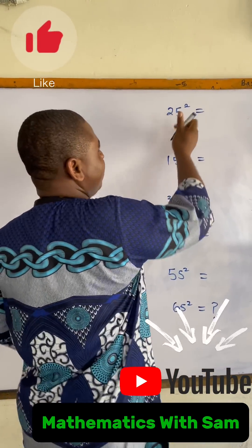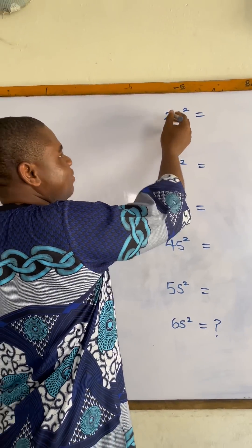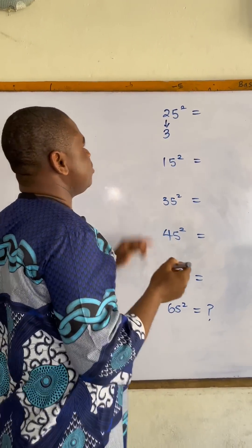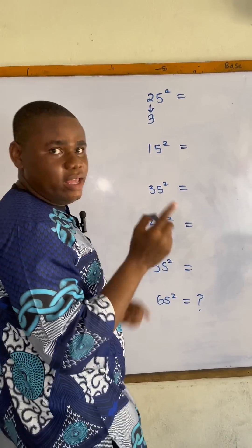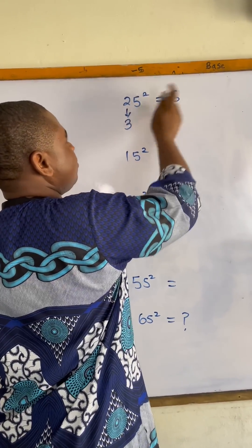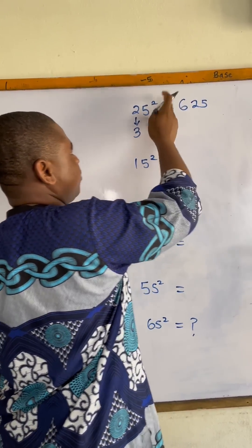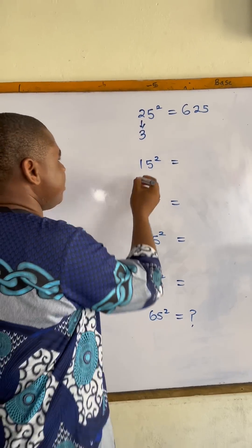For the first one here we have 25 squared. So the next number after two is three, so I have two times three is six. So we have 625 because five squared is 25.